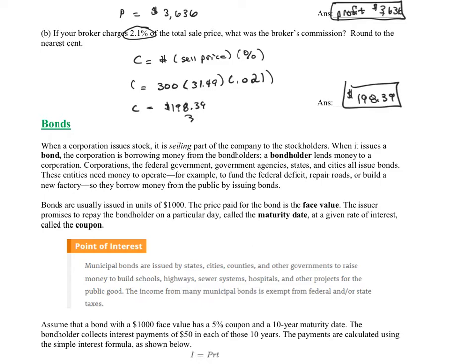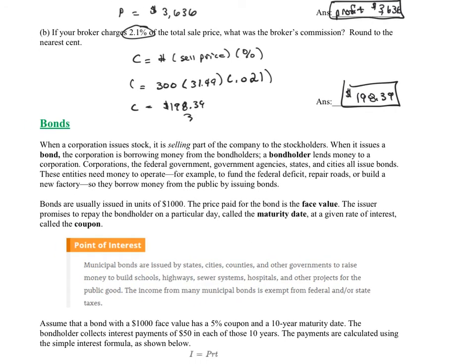The price paid for the bond is the face value. The issuer promises to repay the bondholder on a particular day called the maturity date at a given rate of interest called the coupon. So the interest rate is called the coupon.